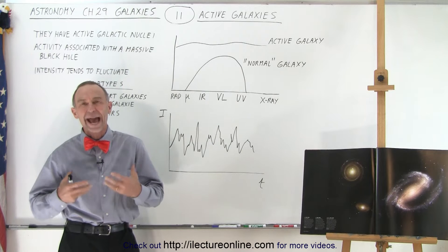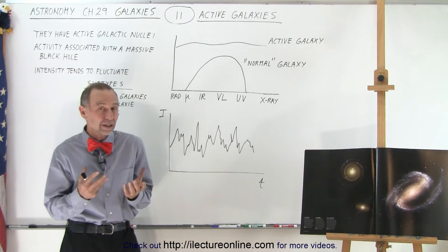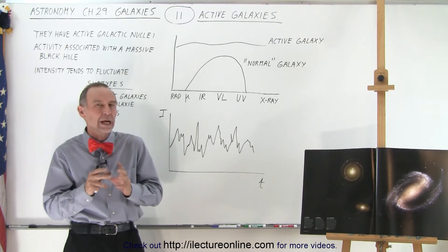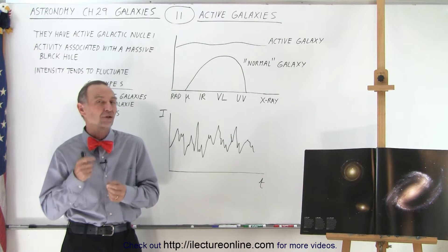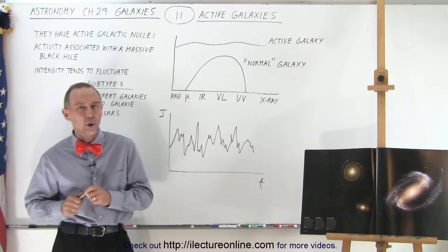There are some galaxies that are called active galaxies, and they're active because there's something unusual going on, typically at the center of the galaxy. This unusual thing is usually associated with a massive black hole.